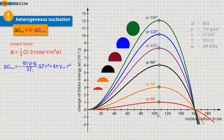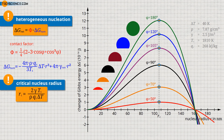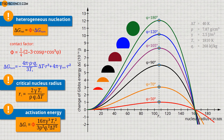Although the nucleation radius is the same for heterogeneous nucleation, only a small part of the imaginary sphere actually forms the nucleus volume. The critical nucleus radius can be determined with the given formula. The activation energy required to form a stable nucleus corresponds to the maximum of the Gibbs curve at the critical nucleation radius. Compared to homogeneous nucleation, this free energy barrier is lower by the value of the contact factor. For homogeneous nucleation, the contact factor reaches its maximum value of 1, making clear that heterogeneous nucleation always requires a lower activation energy.